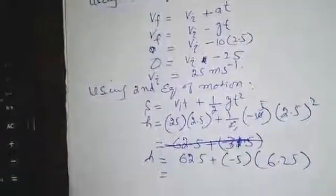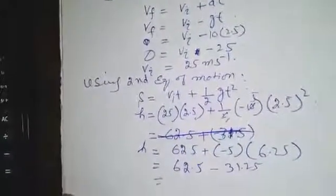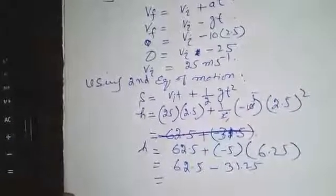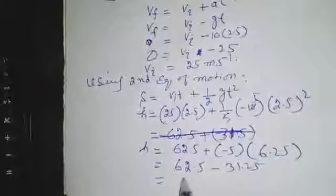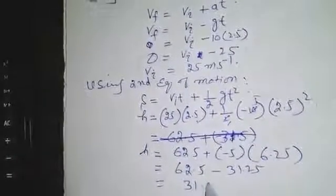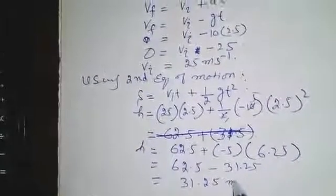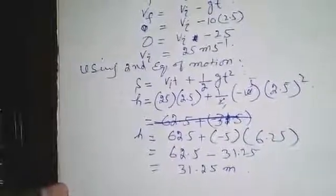62.5 into 5, 62.5 minus 31.25, which is equal to 31.25 meters.